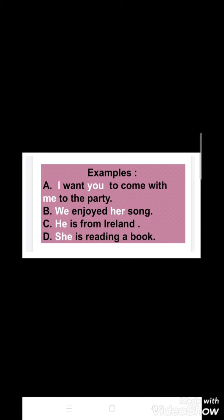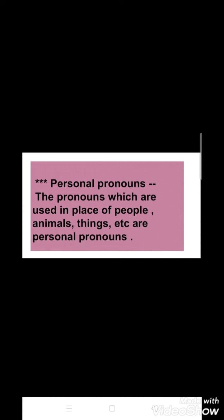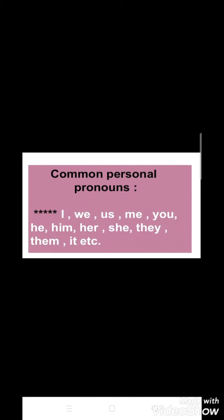These highlighted words or pronouns are signifying some particular persons or things, and these particular pronouns are our personal pronouns. Hence, pronouns which are used in place of people, animals, things, etc., are personal pronouns. It means that personal pronouns always signify certain particular things, persons, or animals. The common personal pronouns are: I, we, us, me, you, he, him, her, she, they, them, it, etc.